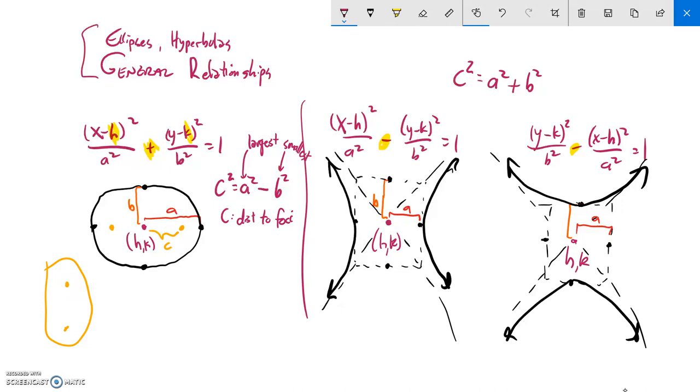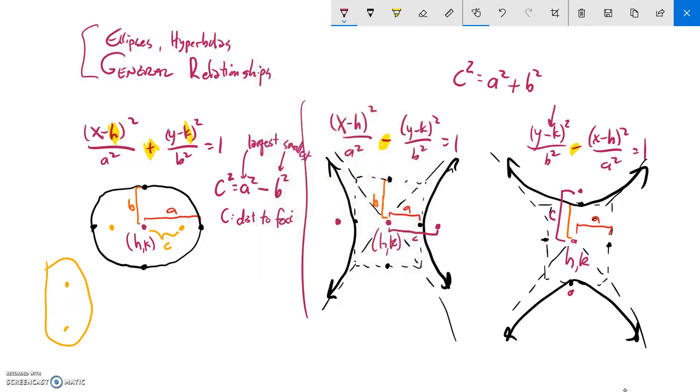So, and then c is in the direction of the vertices. So in this one, c would be here, where that's c. And in this one, c would be here, where that distance is c. And it just goes with the direction that the hyperbola is going.